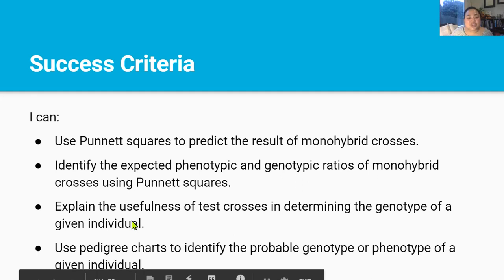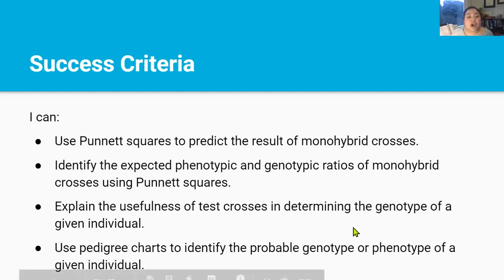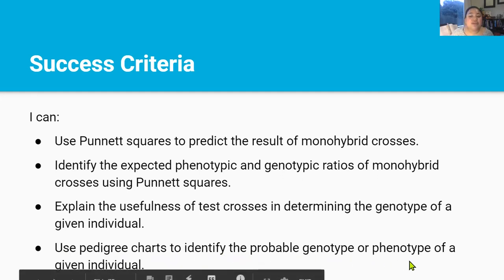By the end of this lesson you should be able to use Punnett squares to predict the result of monohybrid crosses, identify the expected phenotypic and genotypic ratios of monohybrid crosses using Punnett squares, explain the usefulness of test crosses in determining the genotype of a given individual, and use pedigree charts to identify the probable genotype or phenotypes of a given individual.